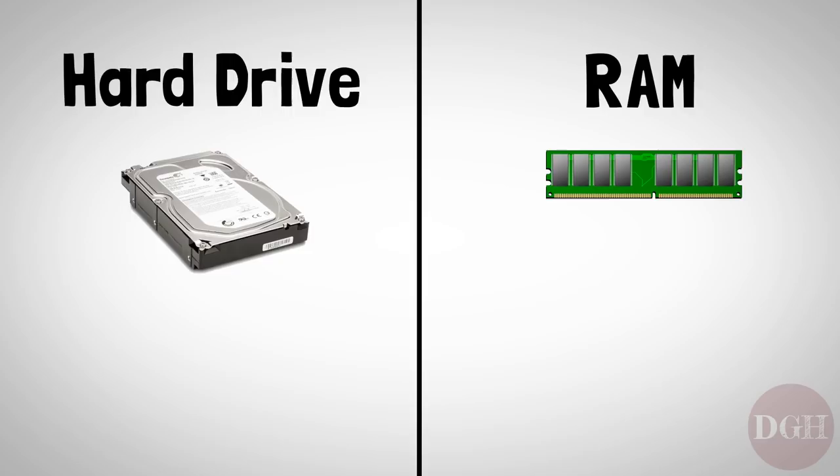To start in very general terms, hard drives let your computer hold more stuff — things like music, photos, videos, applications, etc. RAM on the other hand basically just makes your computer go faster. That's the simple version.